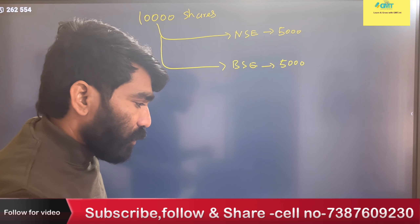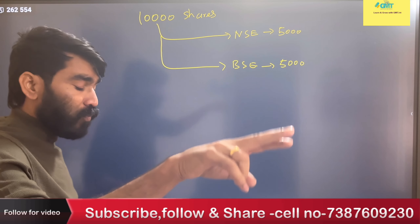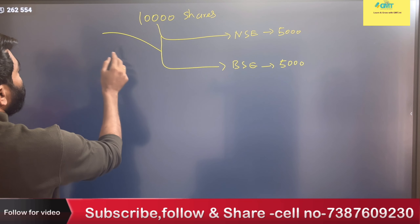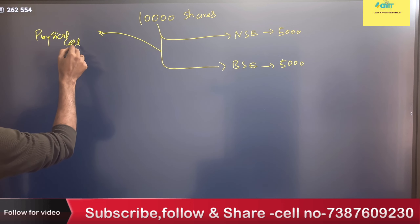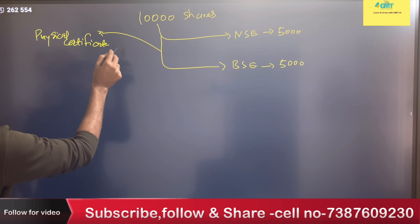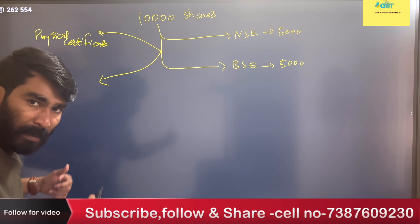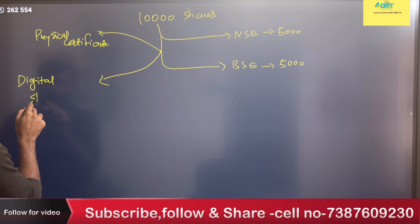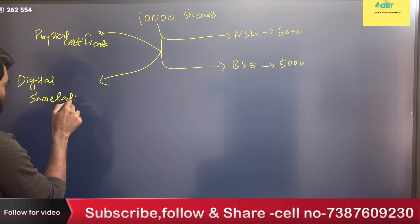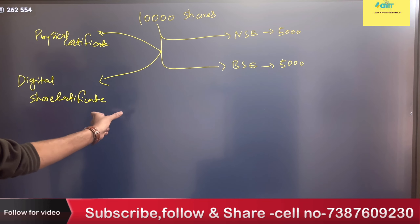When you want to list securities, understand the listing process first. There would be two forms: one is physical certificates, and another one is digital share certificates — similar to how you have one thousand rupee notes or two thousand rupee notes. In this example, GMT decided to opt for a digital certificate.